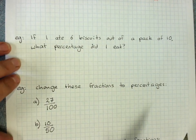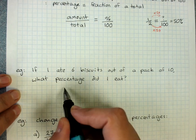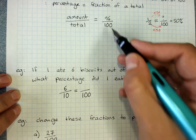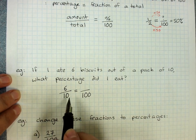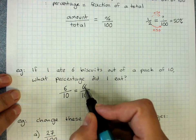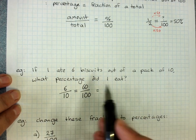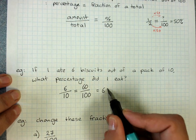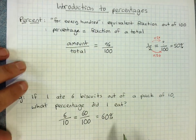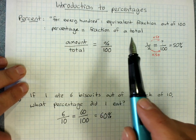So if I ate six biscuits out of a pack of ten, what percentage did I eat? Amount out of total: six out of ten. What would that be out of a hundred as an equivalent fraction? Well, ten times ten would be a hundred, so six times ten means that's an equivalent fraction of sixty out of a hundred.